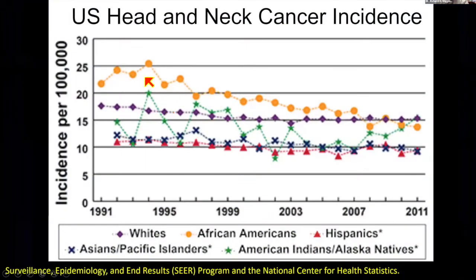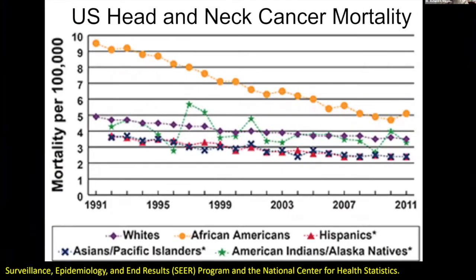Overall, the incidence of cancers we think about is decreasing over time. If we look at all the different races, they've almost all been decreasing in terms of incidence, and mortality has actually been decreasing as well. So we are getting better at treating these, especially in African Americans. These are very aggressive tumors, though, and frequently patients get a second tumor.